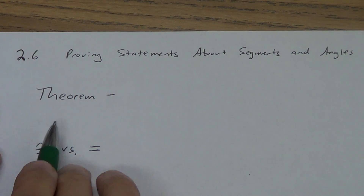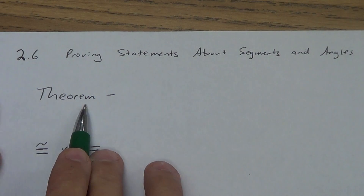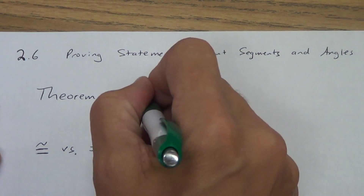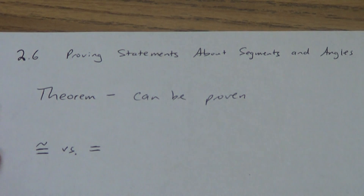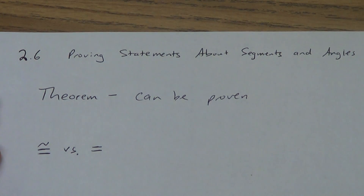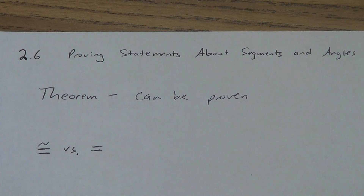We've got a couple things we need to discuss first. The first thing is a theorem. This is similar to a postulate, except a theorem can be proven. It's one of our foundation things in geometry, just like postulates were, just like definitions are, but a theorem can actually be proven true, unlike a postulate which we have to assume is true. We're going to hit our first theorem today — it's a pretty easy theorem.